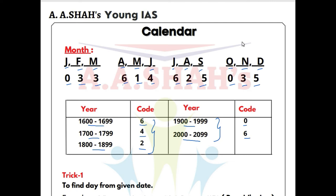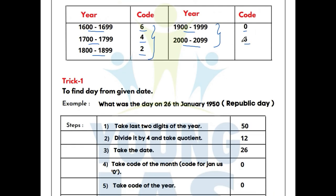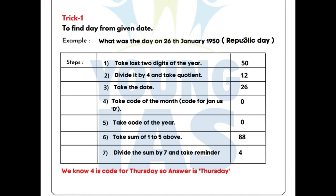Now we will solve a sum to understand how the codes are used. The question is: what was the day on 26th January 1950? First, take the last 2 digits of the year — that is 50. Divide 50 by 4 and take the quotient, ignoring the remainder. 50 divided by 4 gives quotient 12. So we have taken 12. Next, take the date: 26.